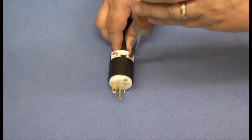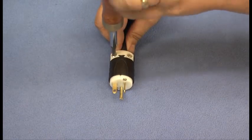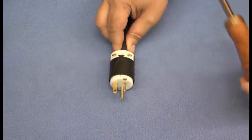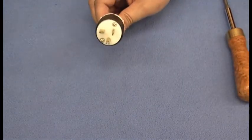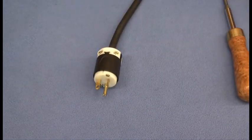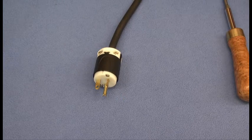the strain reliever in the rear, and the plug is now ready for use. That's the process for putting a plug on your power cord for the Alpha Linear. Thanks for watching.